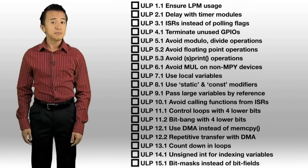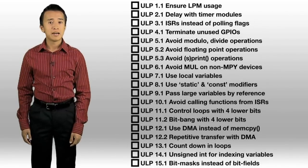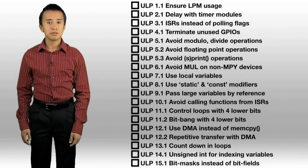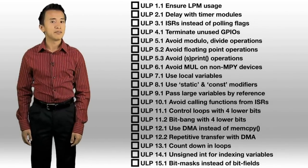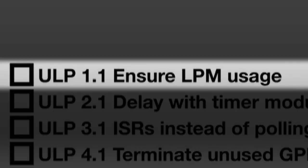There are 15 rules provided with the initial release of ULP Advisor. One example is that the tool ensures your ability to leverage MSP430 MCU's unique low power modes to optimize your application's power profile.